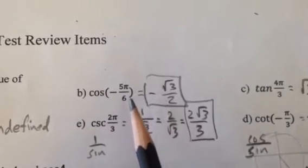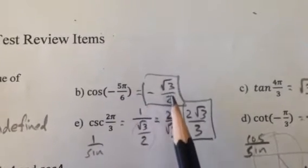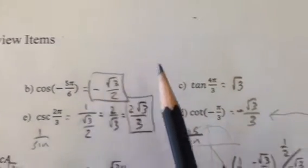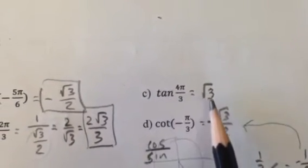Cosine of negative 5pi over 6 is negative root 3 over 2. Got to know where that angle is and take the cosine of it. Tangent of 4pi/3 is the square root of 3. Memorize this stuff.